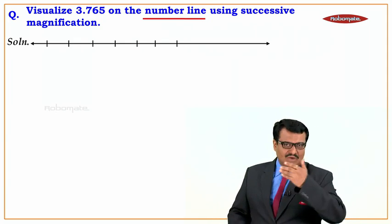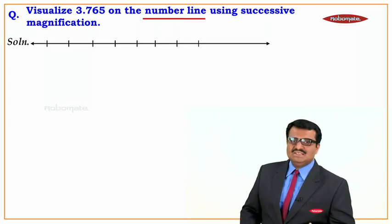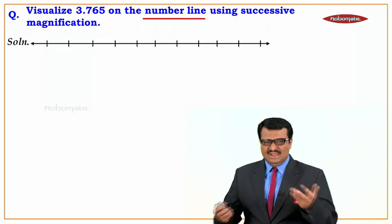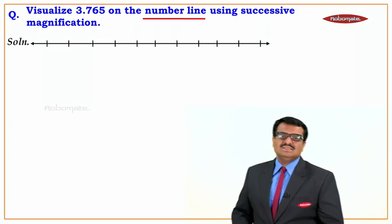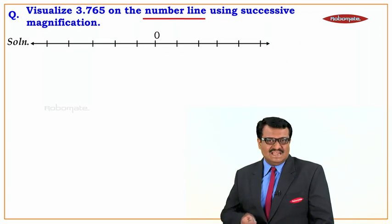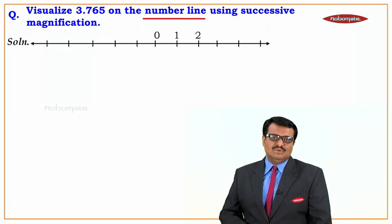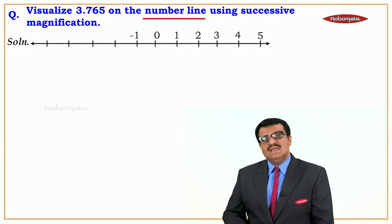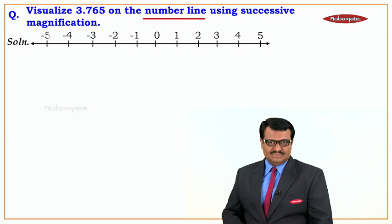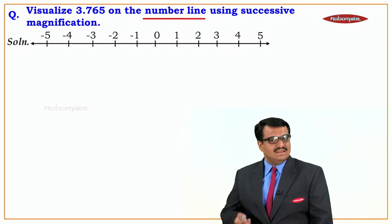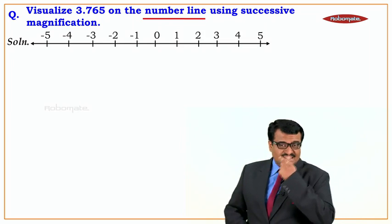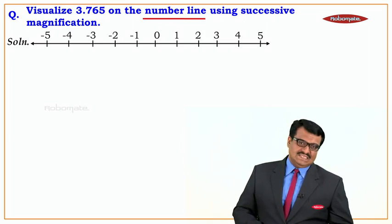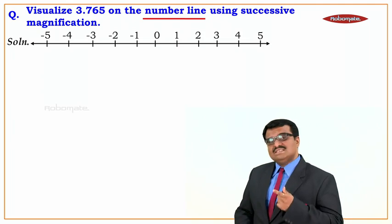We'll make divisions at a gap of 1 centimeter each — you can take 2 centimeters as well, it doesn't make any difference. At the center we'll write 0. On the right side of 0 we will have 1, 2, 3, 4, 5 and so on. To the left of 0 we'll have negative numbers. The number given to us is 3.765.